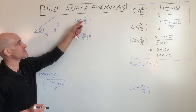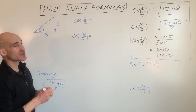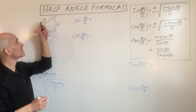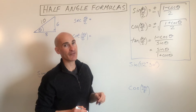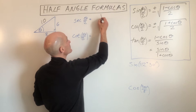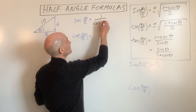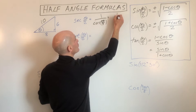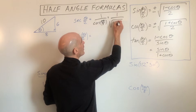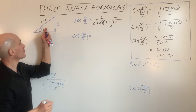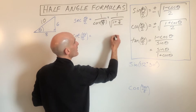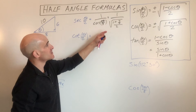First example: find the secant of θ/2. We complete the right triangle by finding the hypotenuse using the Pythagorean theorem. We don't have a formula for secant of the half angle, but cosine and secant are reciprocals of one another, so this is going to be one over the cosine of θ/2. Now cosine is adjacent over hypotenuse, which is 8/10, reduced to 4/5.